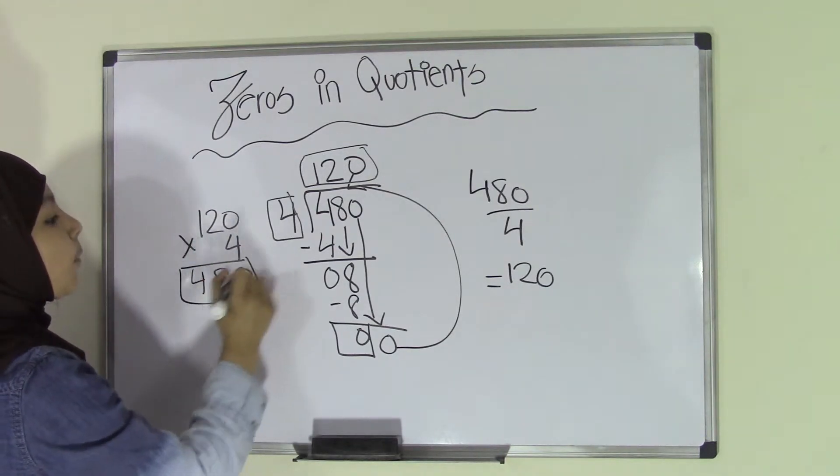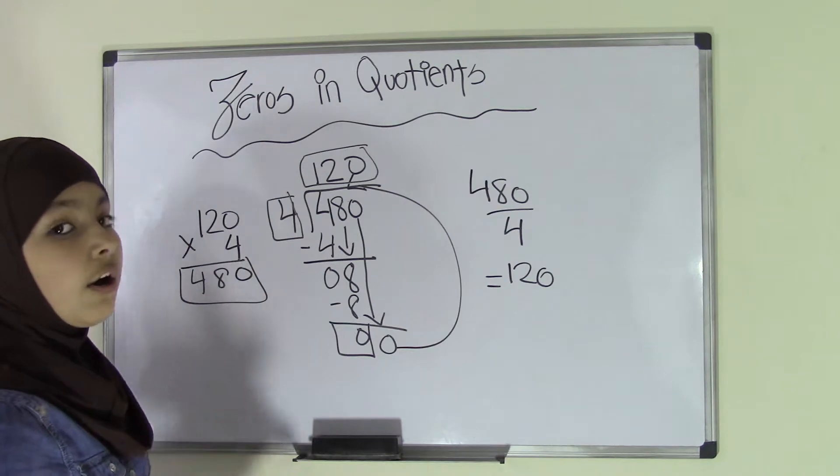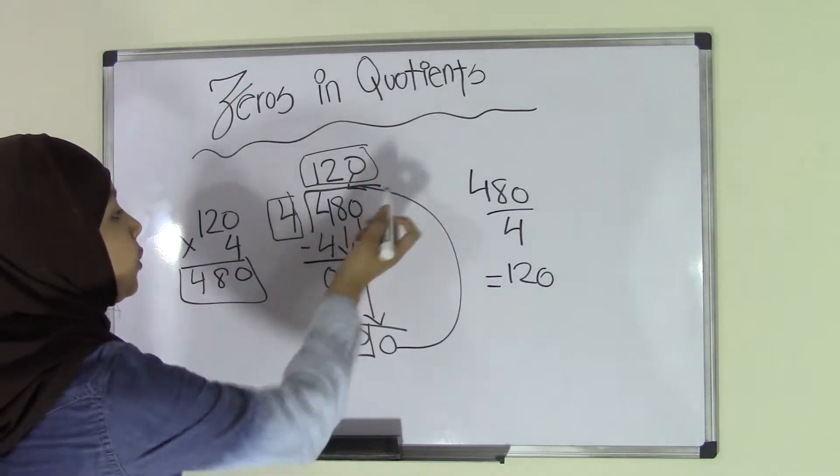And as you can see, 480 and 480 match up. That means our quotient of 120 is correct.